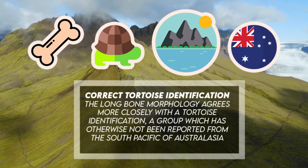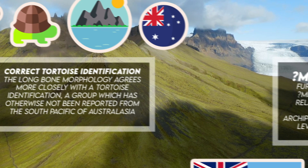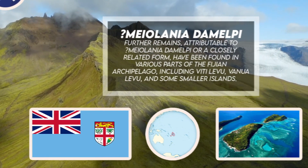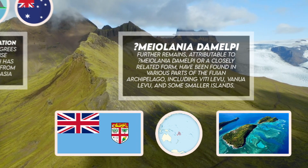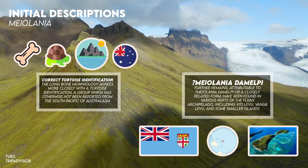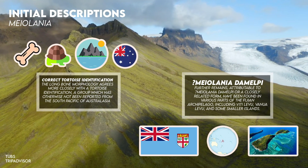Further remains attributable to Myolania damolipi, or a closely related form, have been found in various parts of the Fijian archipelago, including Bedi-lebu, Banuwa-lebu, and some smaller islands.